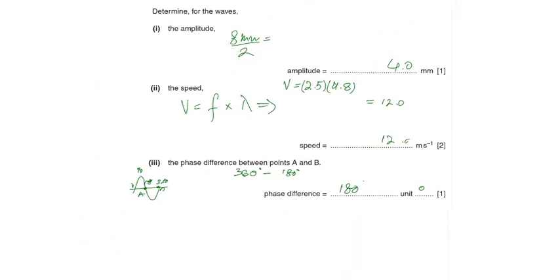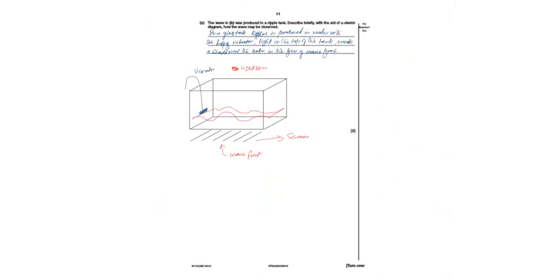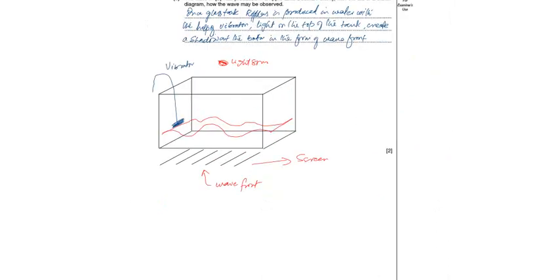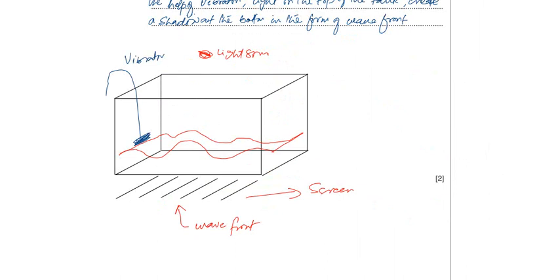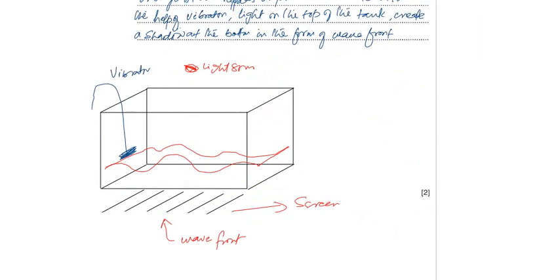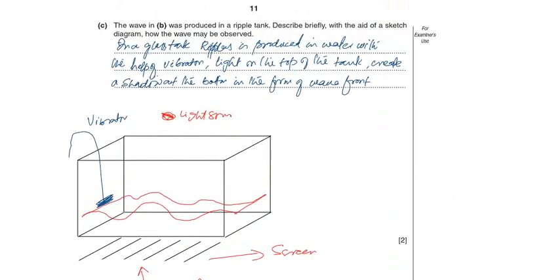So next part, part C. The wave in B was produced in a ripple tank. Describe briefly with the aid of a sketch diagram how the wave may be observed. So we will design a tank and show the water in it.